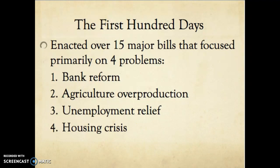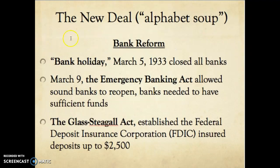No other president has done so much in his first 100 days as FDR. The New Deal is also known as the alphabet soup because of all the acronyms. The first major issue he tackled was bank reform. The day after his inauguration, on March 5, 1933, FDR declared a bank holiday — he closed all the banks. Congress then passed the Emergency Banking Act, which allowed banks to reopen only if they had enough funds to provide people with their savings. The Glass-Steagall Act established the FDIC — Federal Deposit Insurance — which ensured that up to $2,500 of your money was insured, so people began to feel more confidence in the banking system.